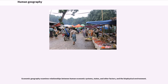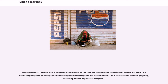Economic geography examines relationships between human economic systems, states, and other factors, and the biophysical environment. Health geography is the application of geographical information, perspectives, and methods to the study of health, disease, and health care. Health geography deals with the spatial relations and patterns between people and the environment, and is a sub-discipline of human geography researching how and why diseases are spread.